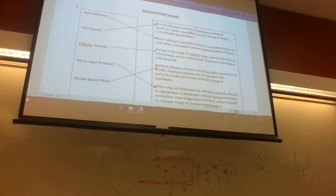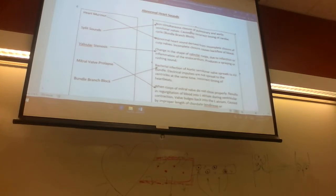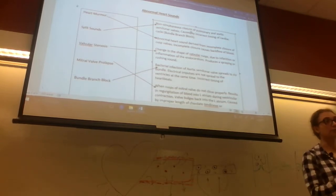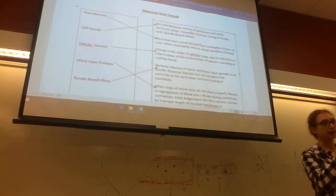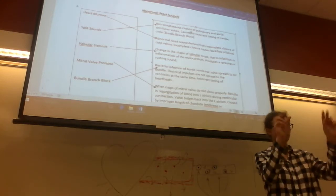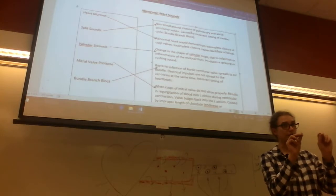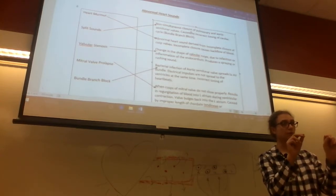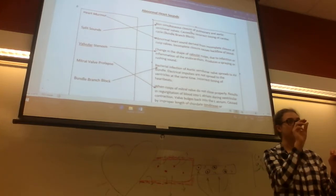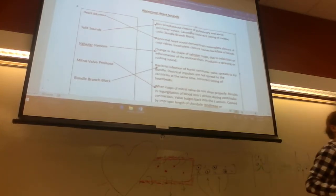Split sounds are the non-simultaneous closure of the pulmonary and aortic semilunar valves — incorrect timing. Your semilunar valves are supposed to close at the same time, but a split sound is when one closes before the other. Normally you hear lub-dub, lub-dub — the AV valves (mitral and tricuspid) make the lub, and the semilunar valves make the dub. With split sounds, you'd hear lub-dub-dub, because the semilunar valves close at different times.